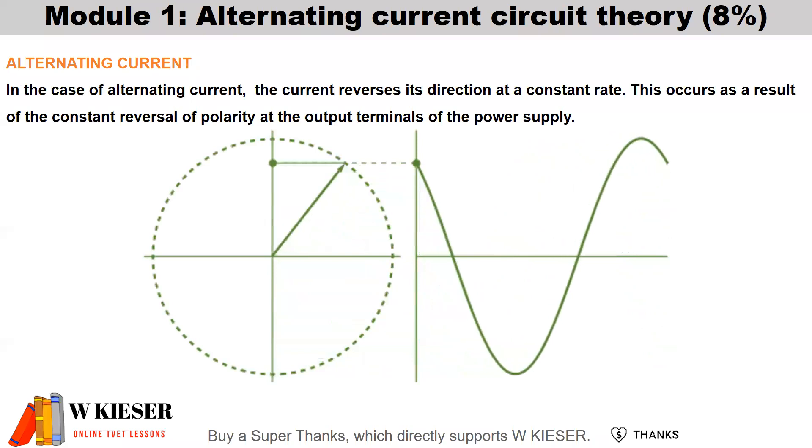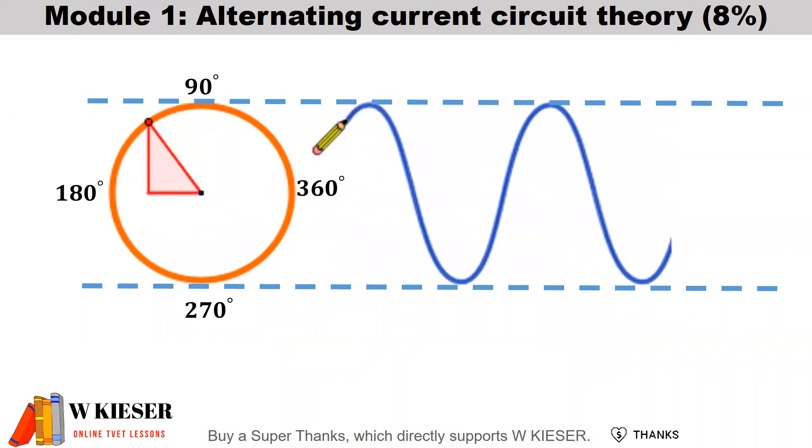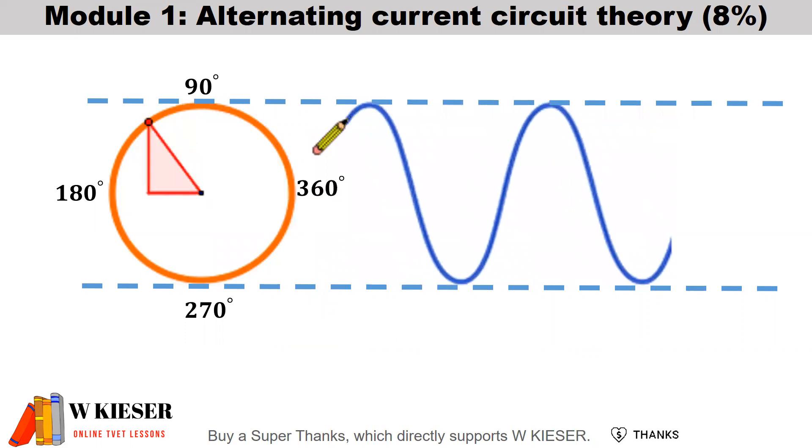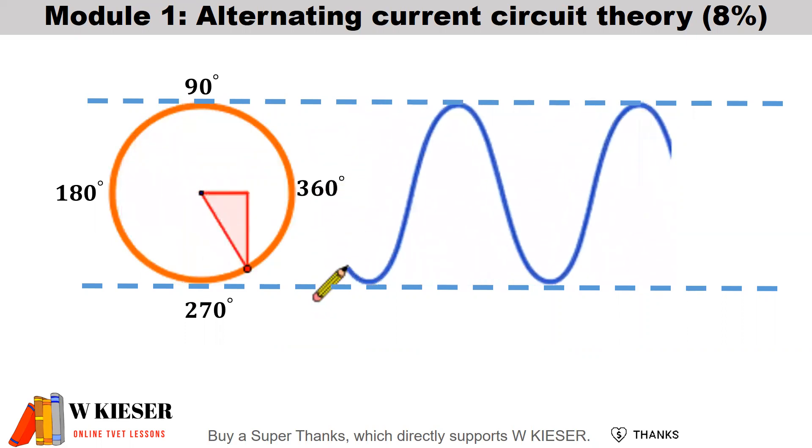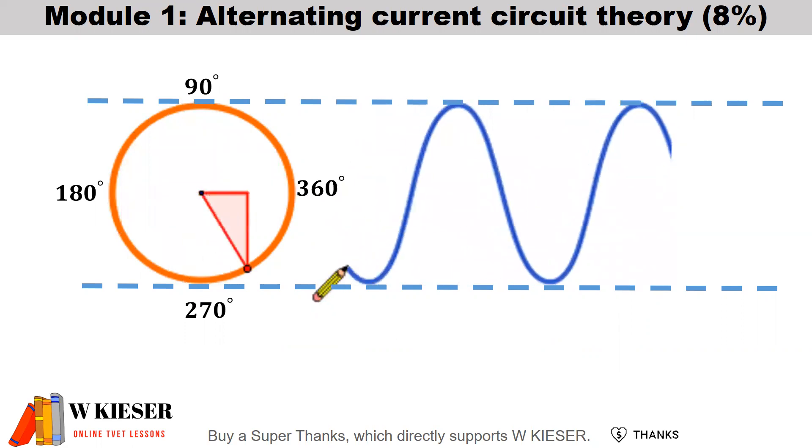In the case of alternating current, the current reverses its direction at a constant rate. This occurs as a result of the constant reversal of polarity at the output terminals of the power supply. Here we have one coil rotating 360 degrees. As we cut through the lines of flux at right angles at 90 degrees and 270 degrees, we produce maximum EMF.